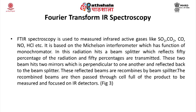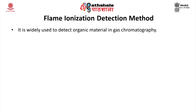The two beams hit two mirrors perpendicular to one another, reflecting back to the beam splitter. The reflected beams are recombined by the beam splitter, then passed through a cell full of the product to be measured, and focused on the IR detector.